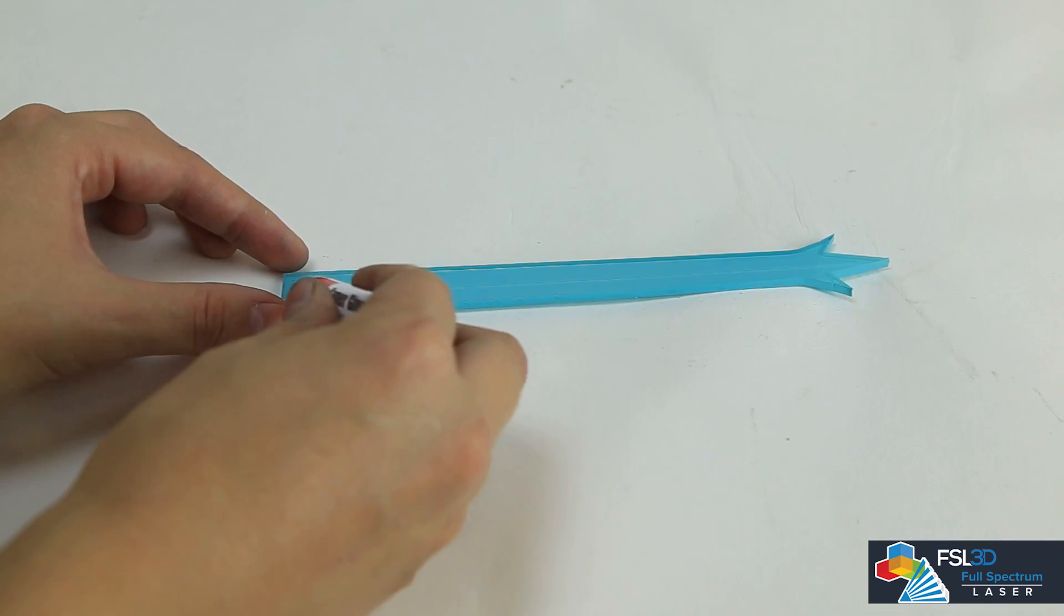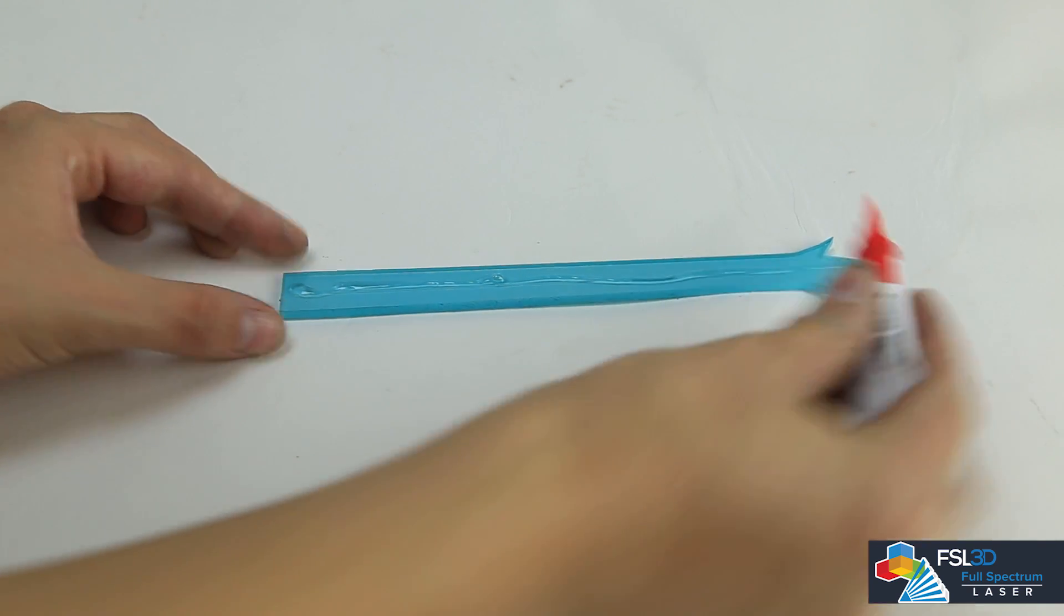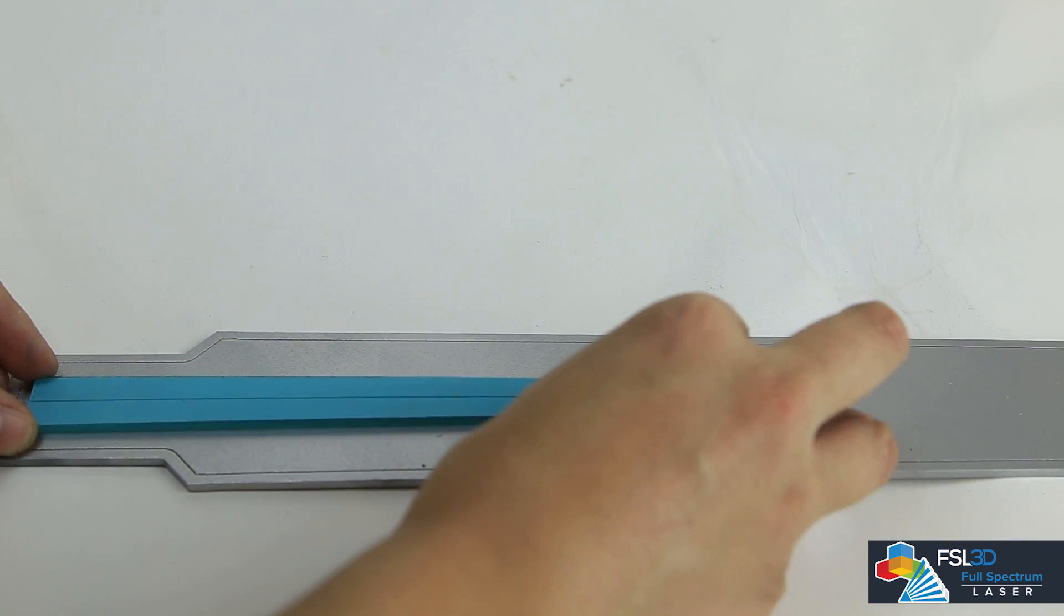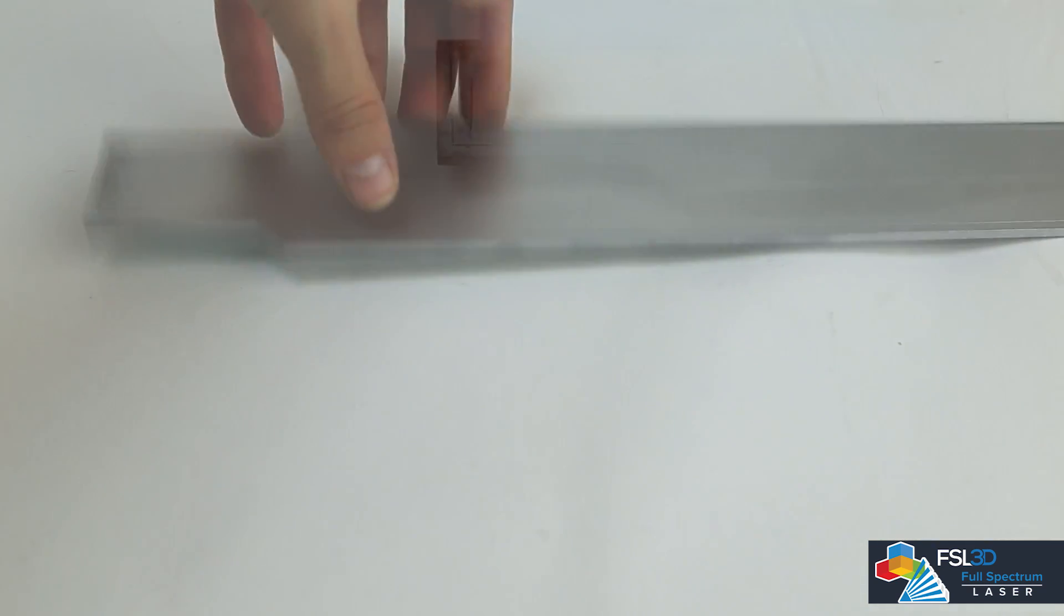Add your glue to the unpainted side of the blade decoration and center it along the seam line. Repeat on the opposite side.